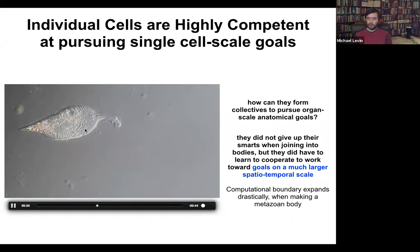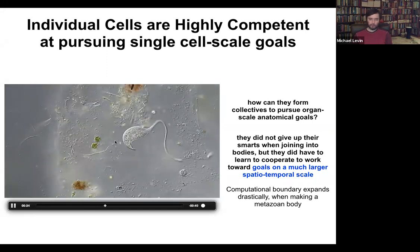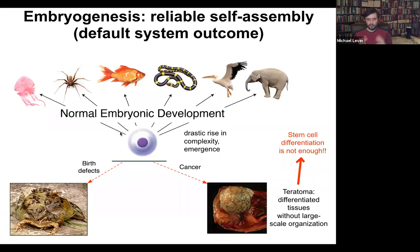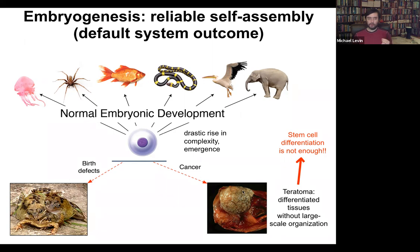The amazing thing is that these cells, which are extremely competent in their local environment, when they work together to make a metazoan body, they can work on much bigger goals. You see an inflation not only of body size but of their ability to pursue states in various kinds of problem spaces, including anatomical morphospace and physiological space. A single cell can give rise to a collection of cells that self-assembles into some incredibly complex morphology. Simply understanding stem cell biology is not going to be enough — here we have a teratoma, which might have hair and teeth and bone and muscle and skin.